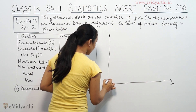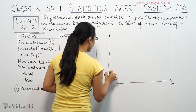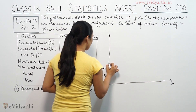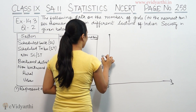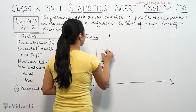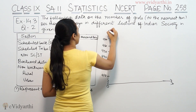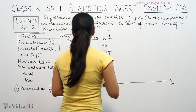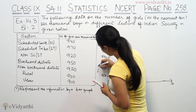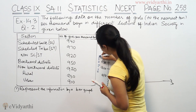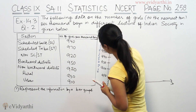On the Y-axis, the scale starts from 910. The values marked are 910, 920, 930, 940, 950, 960, and 970. The Y-axis represents the number of girls per 1,000 boys.